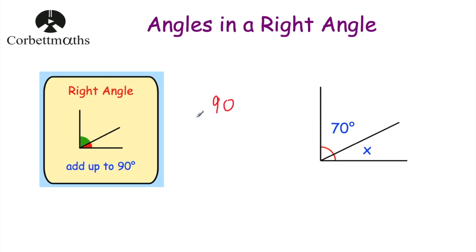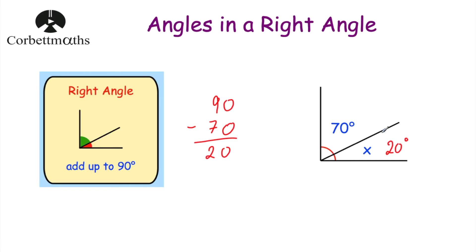So we have 90 and we take away 70. 0 take away 0 is equal to 0, and 9 take away 7 is equal to 2. So that means this angle will be 20 degrees. So this angle is 70 degrees and this angle is 20 degrees.